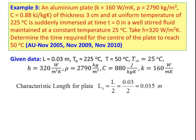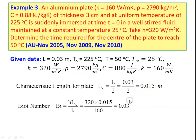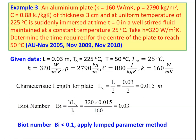For the lumped parameter method, first we have to calculate the characteristic length LC. For a slab, LC equals L by 2. So L equals 0.03 divided by 2, equal to 0.015 meter. The Biot number Bi equals H·LC divided by K: 320 into 0.015 divided by 160 equals 0.03. This Biot number is less than 0.1, so we can apply the lumped parameter method. You have to calculate the Biot number, conclude it is less than 0.1, and confirm we may apply the lumped parameter method to solve the problem.